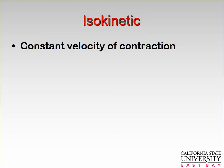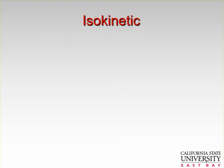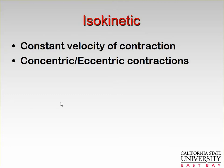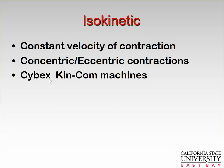You can have isokinetic movement, which is constant velocity of contraction. There are isokinetic machines that can test you both concentrically and eccentrically. You don't change the load on them — you change the velocity, either slow or fast. We'll discuss the effect of velocity on force production when we get to the force-velocity curve. Examples of isokinetic machines include Cybex or KinCom machines, which you might have seen in clinics.